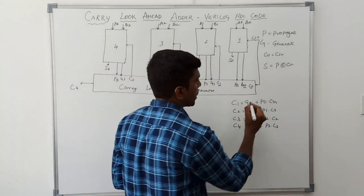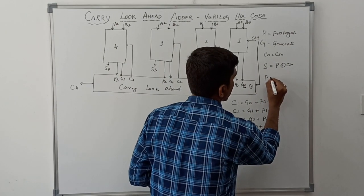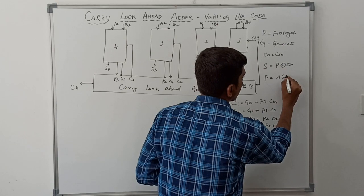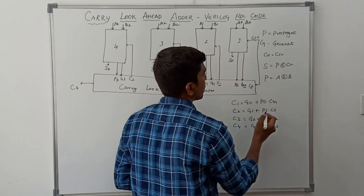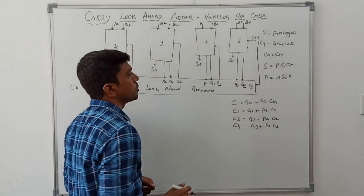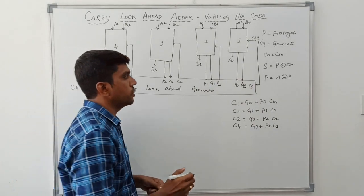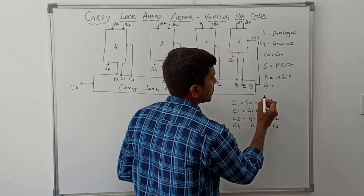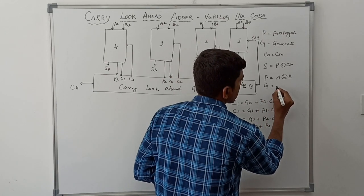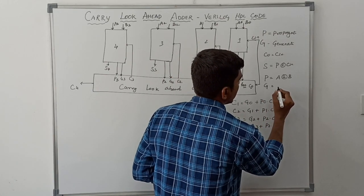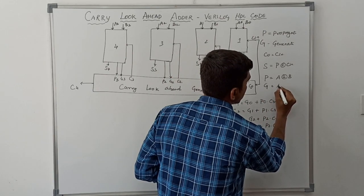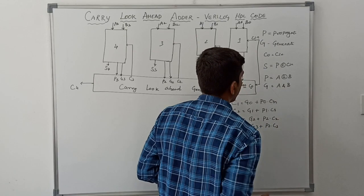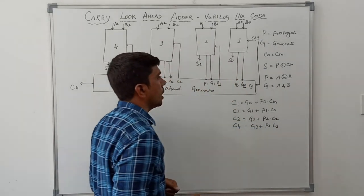The propagate equation is P = A XOR B. This equation is used to find the propagation value. The generate equation is G = A AND B.